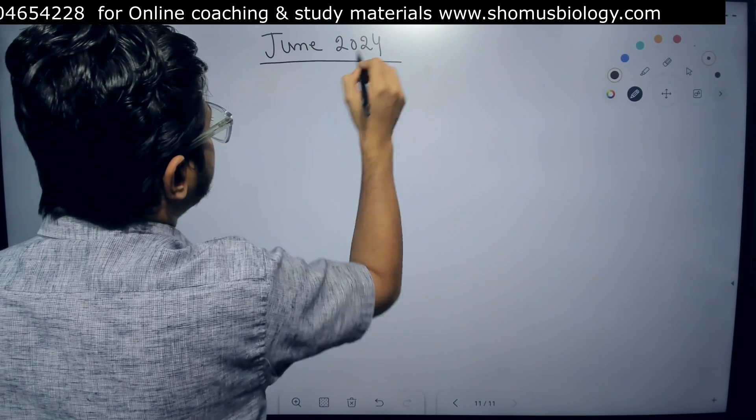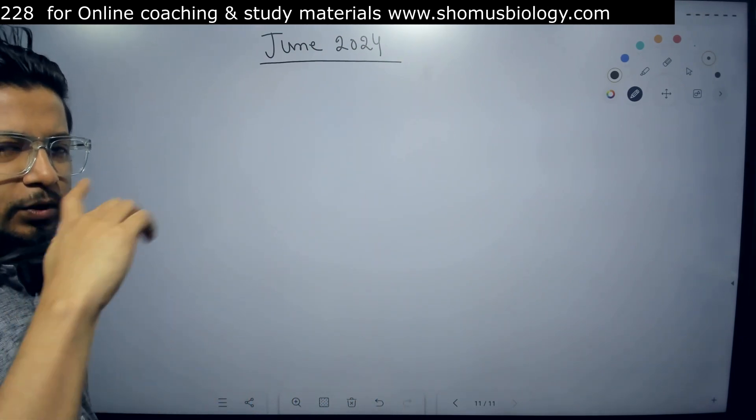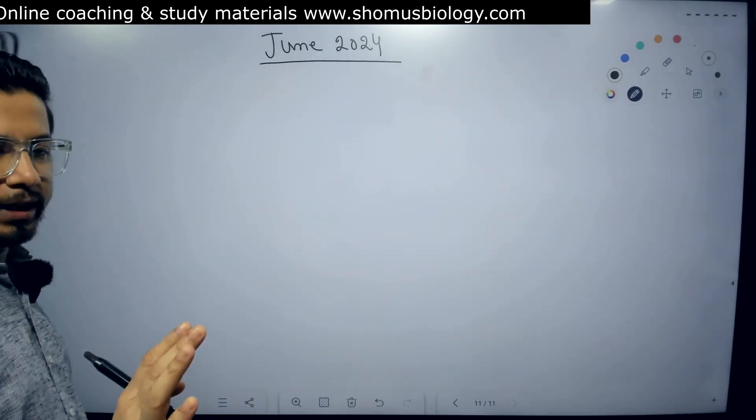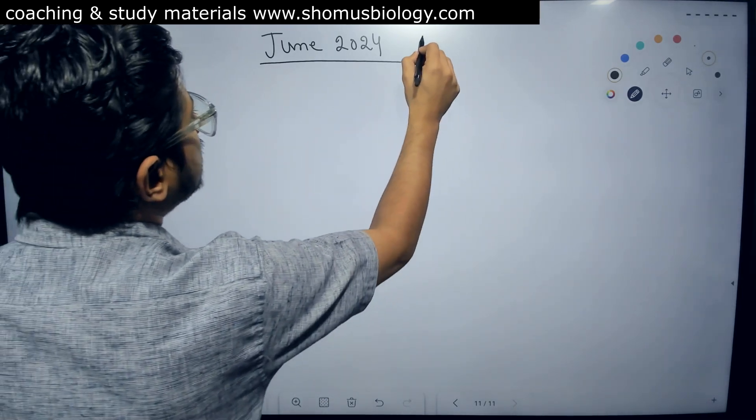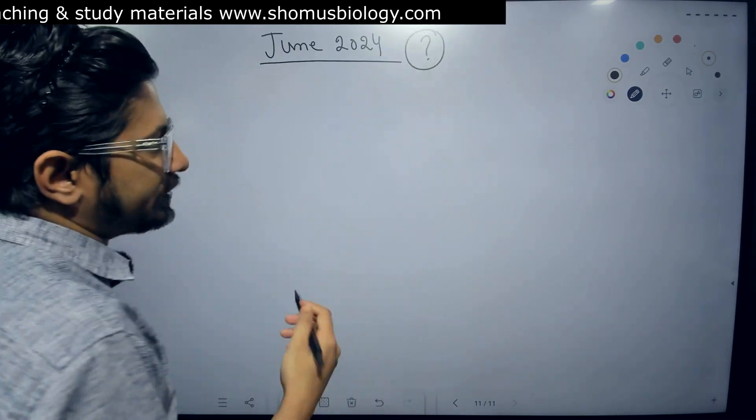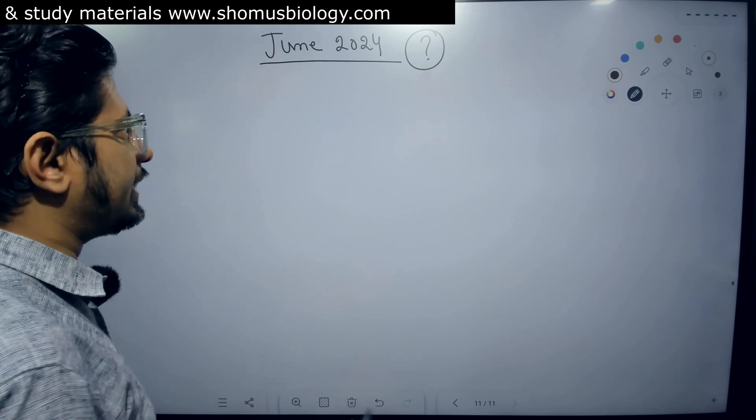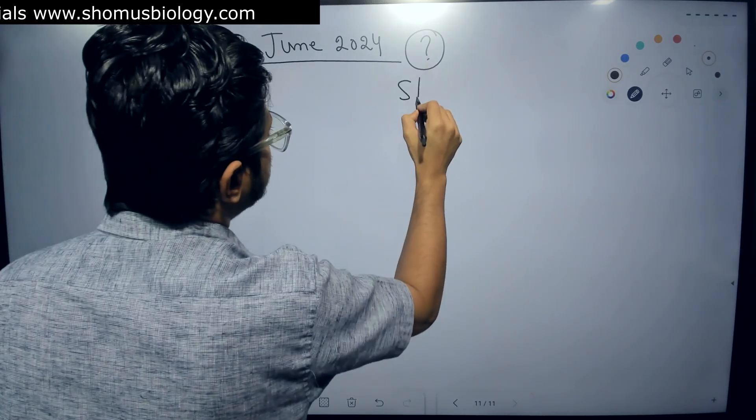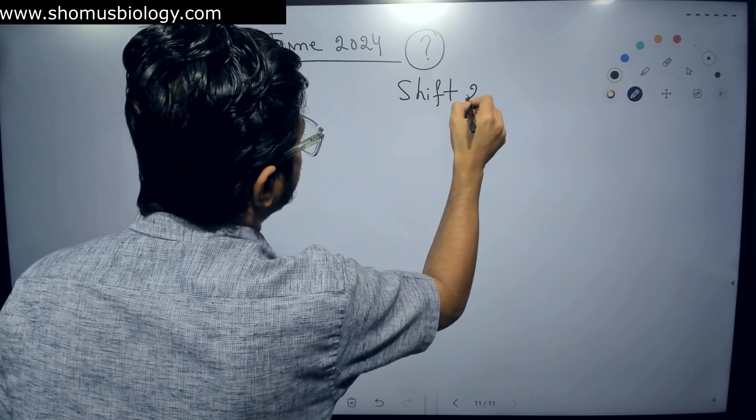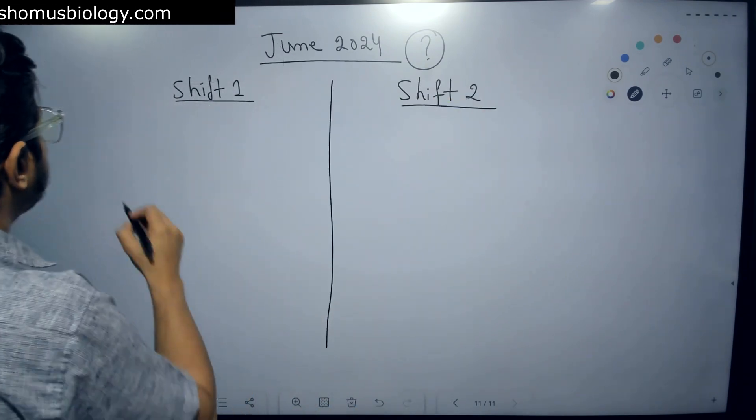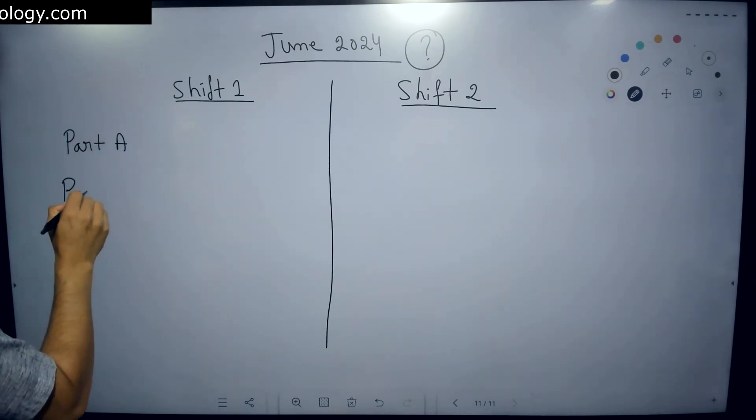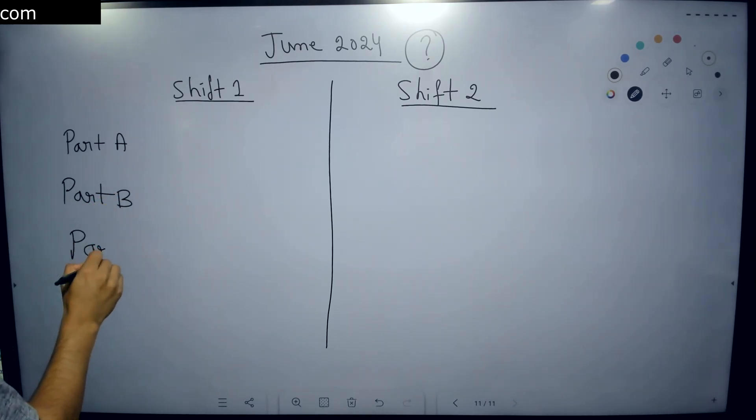Let me write it here for June 2024. I will not call it July exam because let's make it very simple: June exam and December exam. So how was the exam? Was it easy? Was it difficult? We need to see that. There are two shifts - Shift 1 and Shift 2. With respect to Part A, we have Part B, and we have Part C. What are the quality and type of questions that we received, that is what I'm going to review.